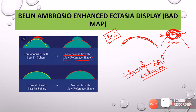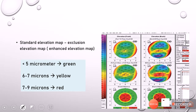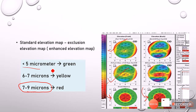This is the concept of the BAD display — the Belin-Ambrósio Enhanced Ectasia Display — because we are enhancing the best fit sphere and getting the elevation map in such a way that even minor keratoconus becomes more obvious. We calculate the difference between the standard elevation map and the exclusion elevation map. A green zone is good, yellow is intermediate, and red is severe and dangerous. Less than 5 micrometers difference is green; 6 to 7 is yellow; and 7 to 9 micrometers is red — very risky, indicating the patient may have ectasia.